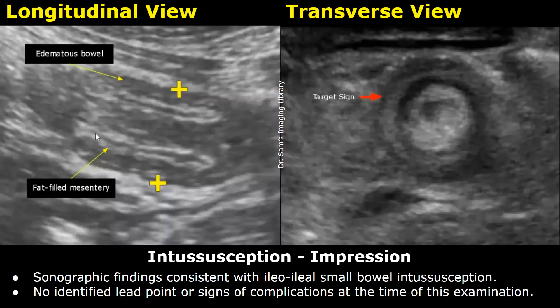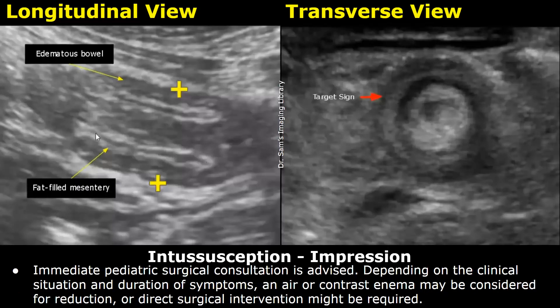Impression: sonographic findings consistent with ileo-ileal small bowel intussusception. No identified lead point or signs of complications at the time of this examination. Immediate pediatric surgical consultation is advised. Depending on the clinical situation and duration of symptoms, an air or contrast enema may be considered for reduction, or direct surgical intervention might be required.